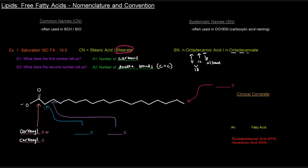The carbon immediately adjacent to the carbonyl carbon — the one labeled with the blue arrow — is the alpha carbon. The next one would be beta. Those are the first two letters of the Greek alphabet; you could continue with gamma, delta, and so forth, but normally we don't go further than alpha or beta. One particular reason this is important is the process called beta oxidation, which oxidizes the beta carbon and breaks down fatty acids for energy. I actually have a video on that.